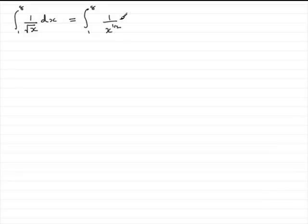So we've got 1 over x to the power 1 half to be integrated with respect to x. Trouble is x to the power 1 half is on the bottom of the fraction here and we need to bring this up to the top.